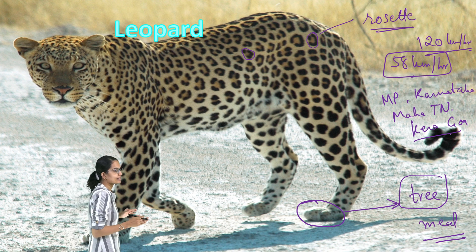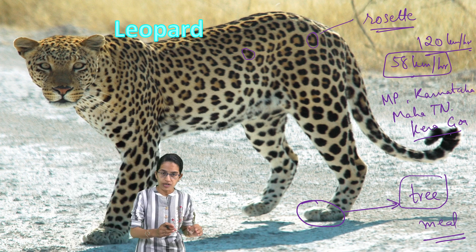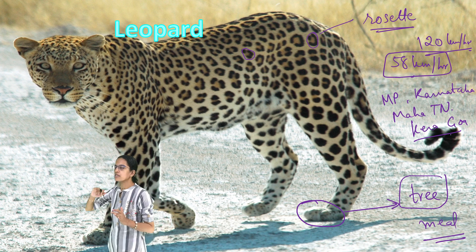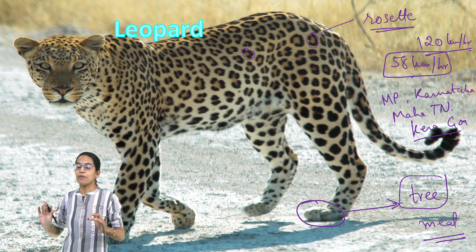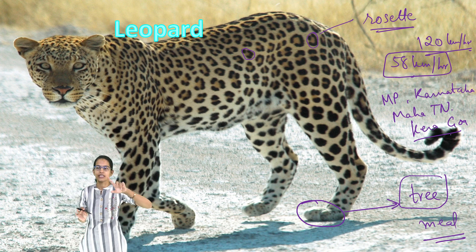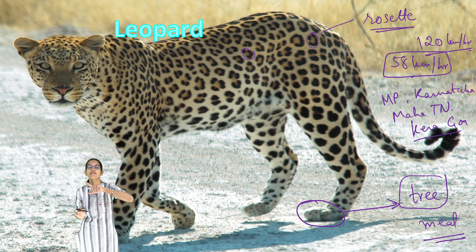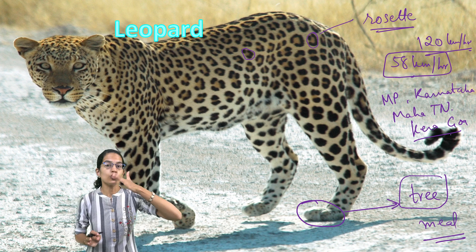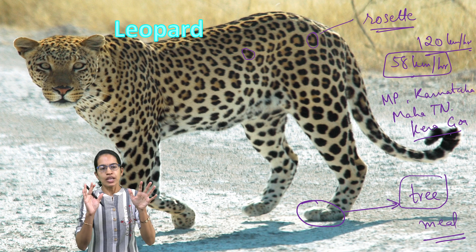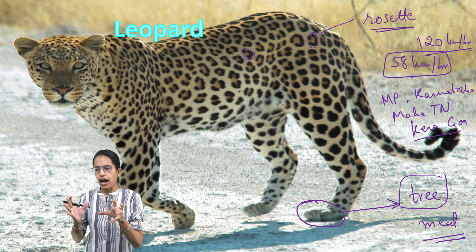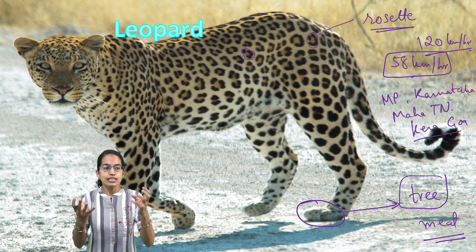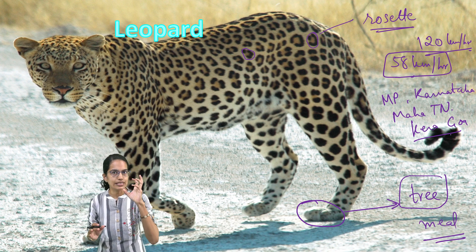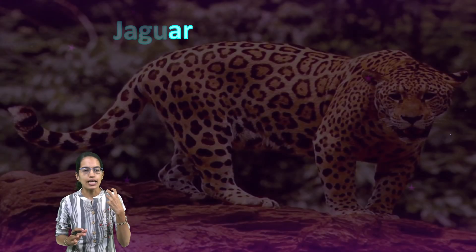Leopard can be further classified as clouded leopard and snow leopard. Snow leopard is usually seen in hilly areas, and its population is increasing in regions of Himachal Pradesh. It is the state animal of Ladakh, though its population in other areas has been declining. Leopard is extensively found in India and has light-sensitive cells in its eyes, allowing it to hunt at night.